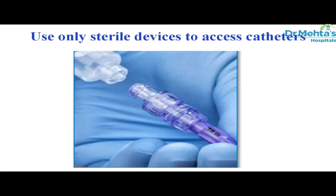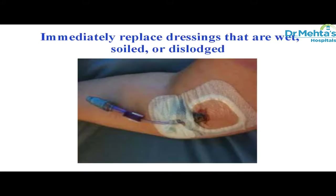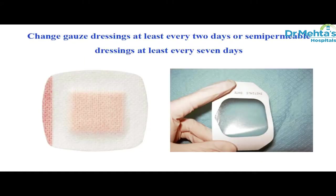Use only sterile devices to access catheters. Immediately replace dressings that are wet, soiled, or dislodged. Change the gauze dressing every day. If you use a semipermeable membrane dressing, it has to be changed every 7 days or when it gets soiled.